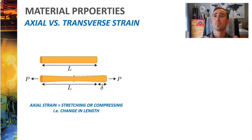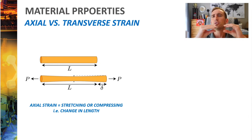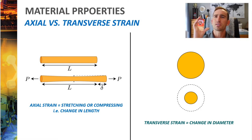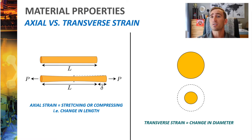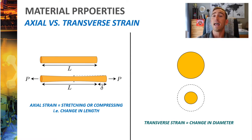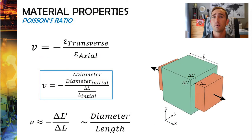One important distinction we need to make is the idea of axial versus transverse strain. Axial strain is along the axial length of the material — when you pull or compress it, it stretches or gets shorter. But in addition, the material's cross-section is also impacted: that's measured by transverse strain, which represents the change in diameter. When you pull a material, the diameter gets smaller and smaller until it fails; if you squish it, the material balloons out and gets wider.